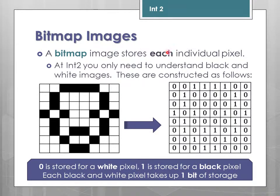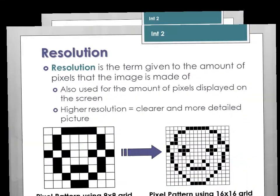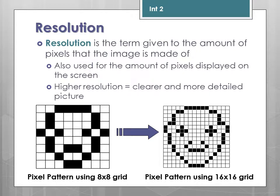The important thing is that each and every pixel is stored, whether it's white or black. Even if I change everything to black or everything to white, it will still take the same amount of file storage. If I increase the amount of pixels from 8x8 to 16x16, I've increased the resolution of the image. Increasing the resolution means more pixels make up the image, which gives a clearer and more detailed picture, but does increase the storage size.